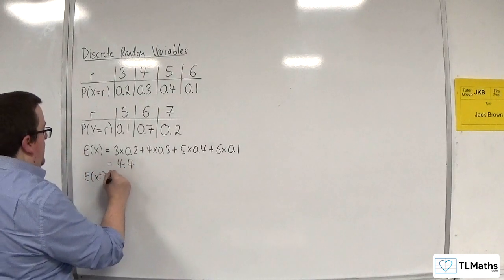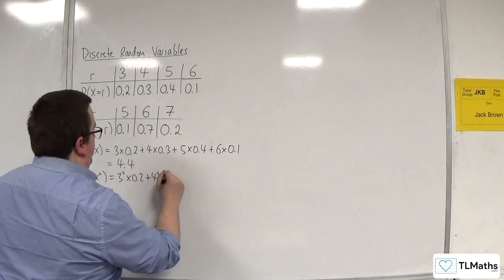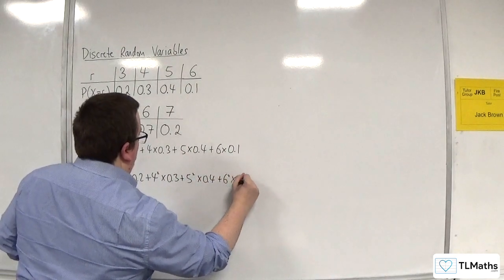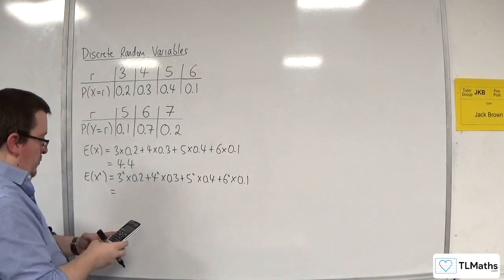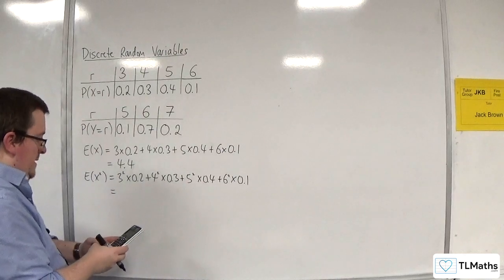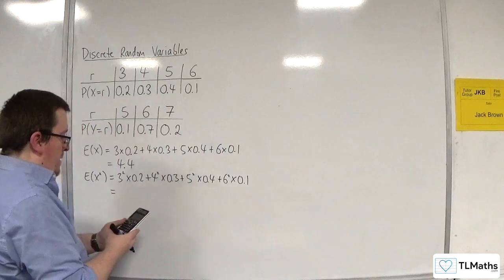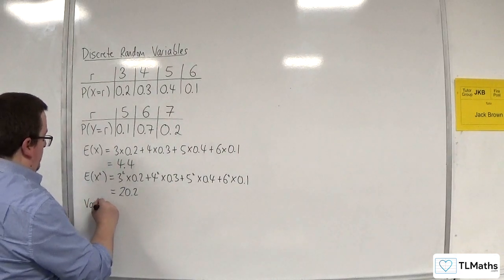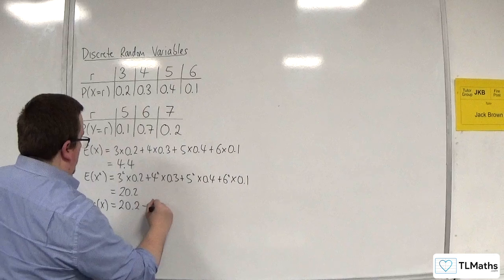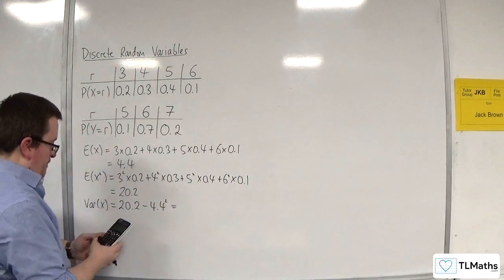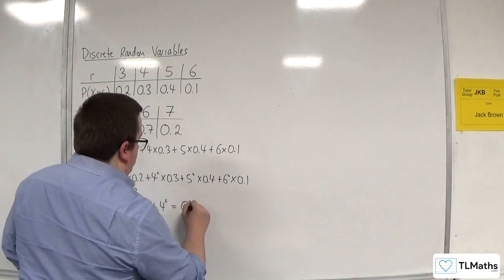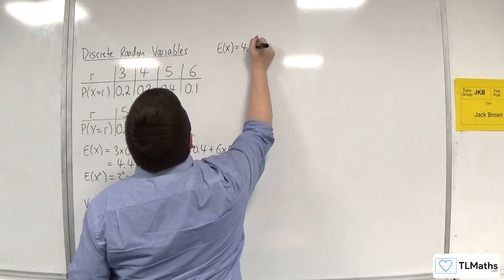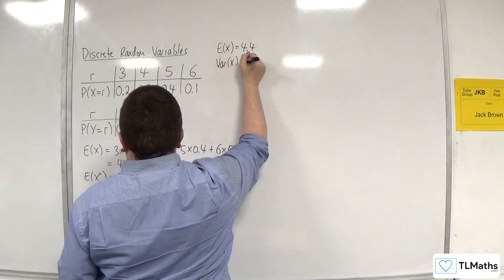So E(x²) will be 3² × 0.2 plus 4² × 0.3 plus 5² × 0.4 plus 6² × 0.1 — that's 9 lots of 0.2, plus 16 lots of 0.3, plus 25 lots of 0.4, plus 36 lots of 0.1, giving 20.2. So Var(x) is 20.2 take away 4.4 squared, which is 0.84.